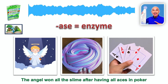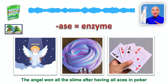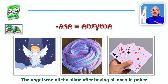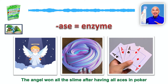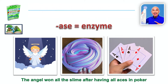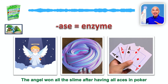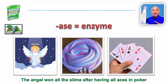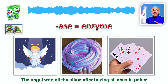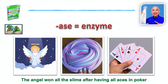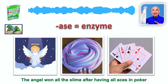For -ase, I would picture the ace — like ace of hearts, ace of spades, ace of clubs, ace of diamonds in poker cards. And for enzyme, I would picture an angel with slime. So my story would be the angel won all the slime after having all aces in poker. Maybe picture the angel throwing the slime on its wings, on top of its halo, on its head. So picture the angel with slime having aces.